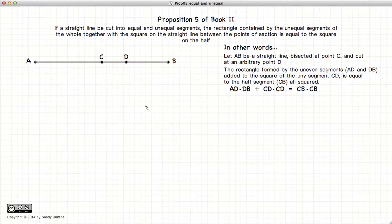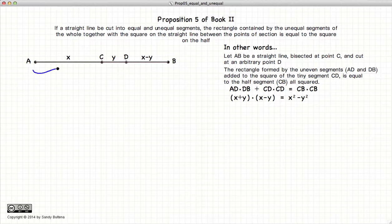Now if we look at this from a more algebraic point of view, it might be a little easier to understand. If AC is half of AB, then AC is X, and CB is also X.